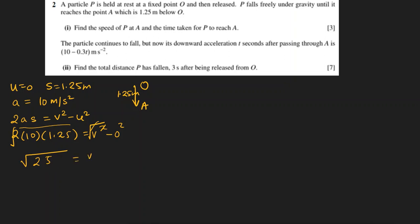So that is 5 meters per second — that is the speed at point A. The particle continues to fall, but now its downward acceleration T seconds after passing through A — not from the starting — is 10 minus 0.3T.